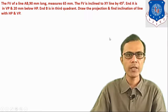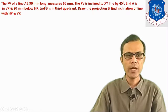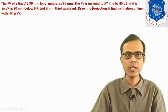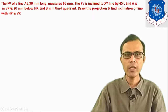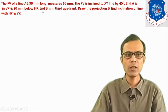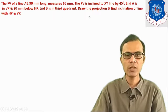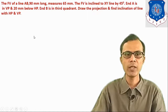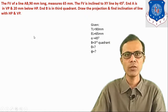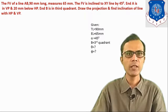The given data is: the front view of line AB is 90 mm long and measures 65 mm. The front view is inclined to the XY line by 45 degrees. End A is in VP and 20 mm below HP. Another end B is in the third quadrant. Draw the projection and find the inclination of the line with HP and VP. First of all, you should be able to identify the given data.